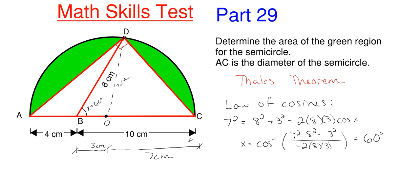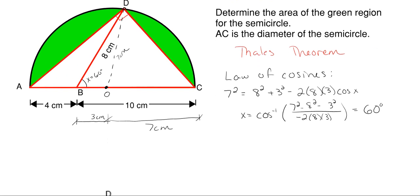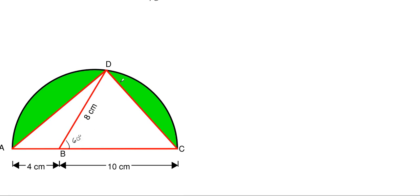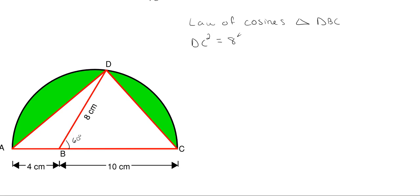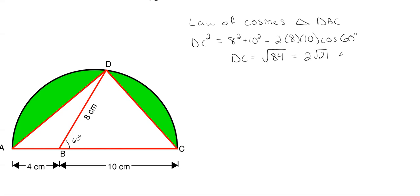Using that 60-degree angle in the larger triangle DBC, I'll apply the law of cosines again to find DC. DC² = 8² + 10² − 2(8)(10)cos(60°). Solving this, DC equals the square root of 84, which is 2√21 centimeters.